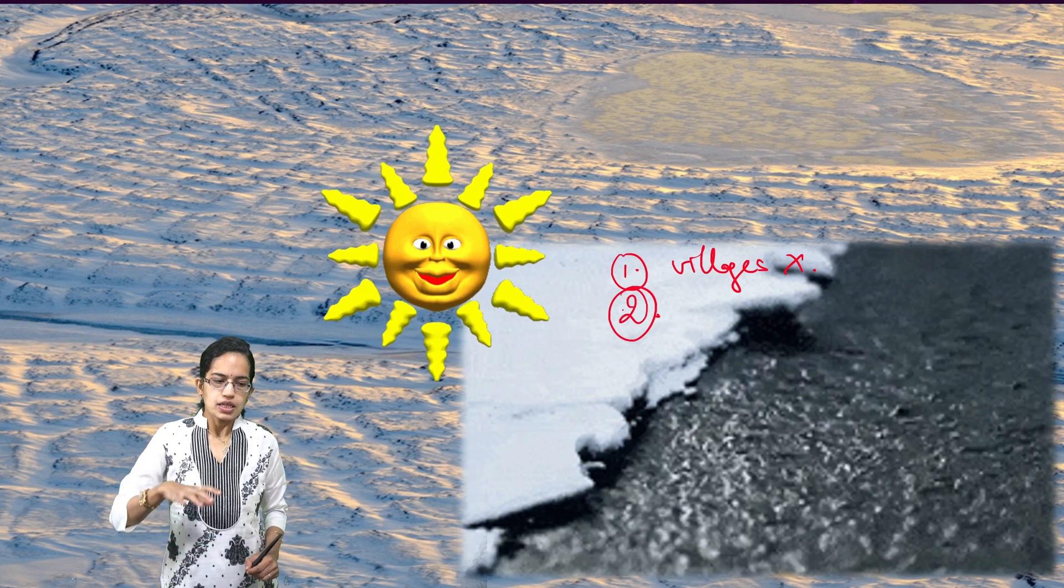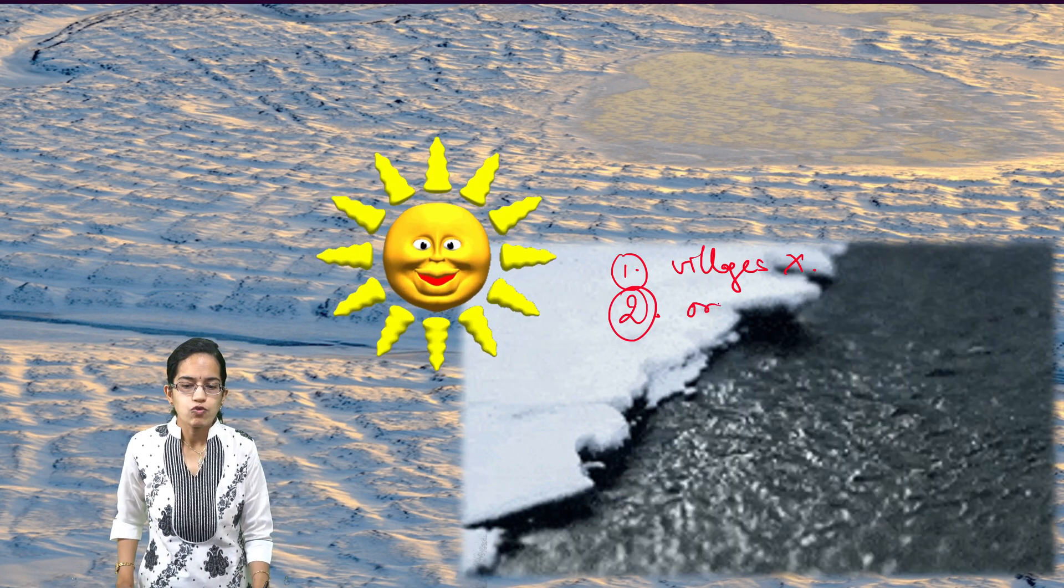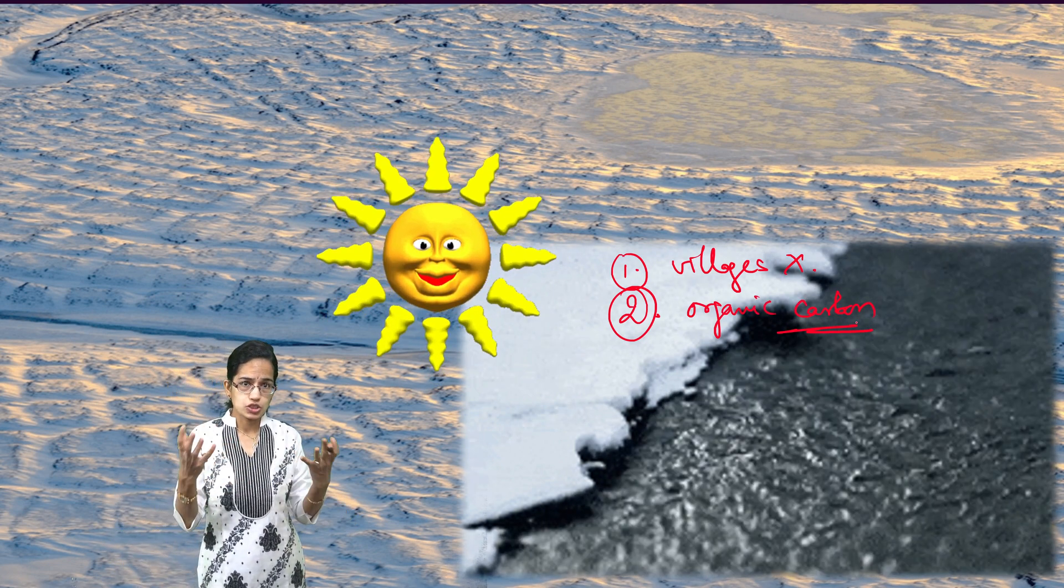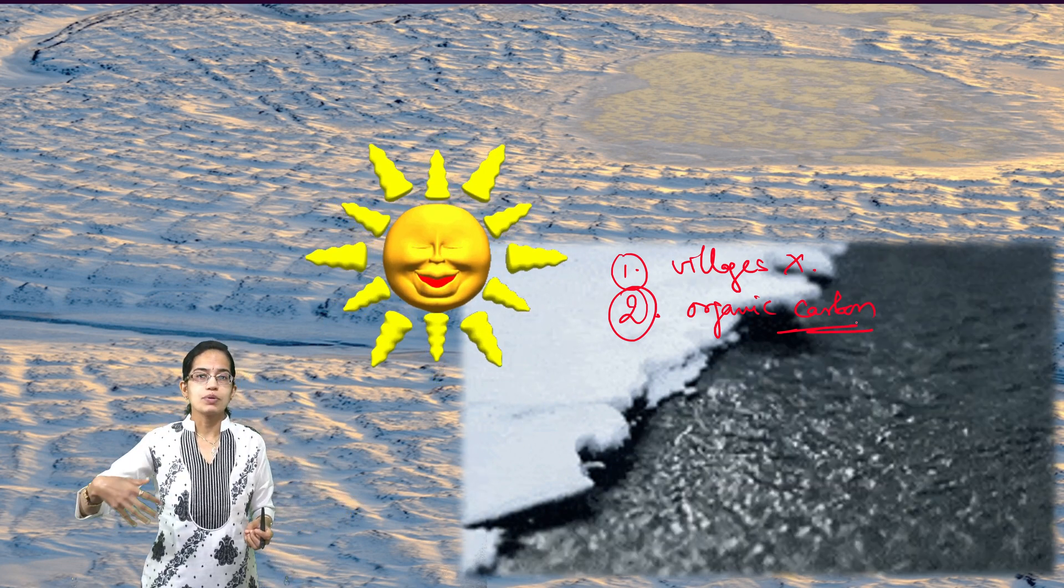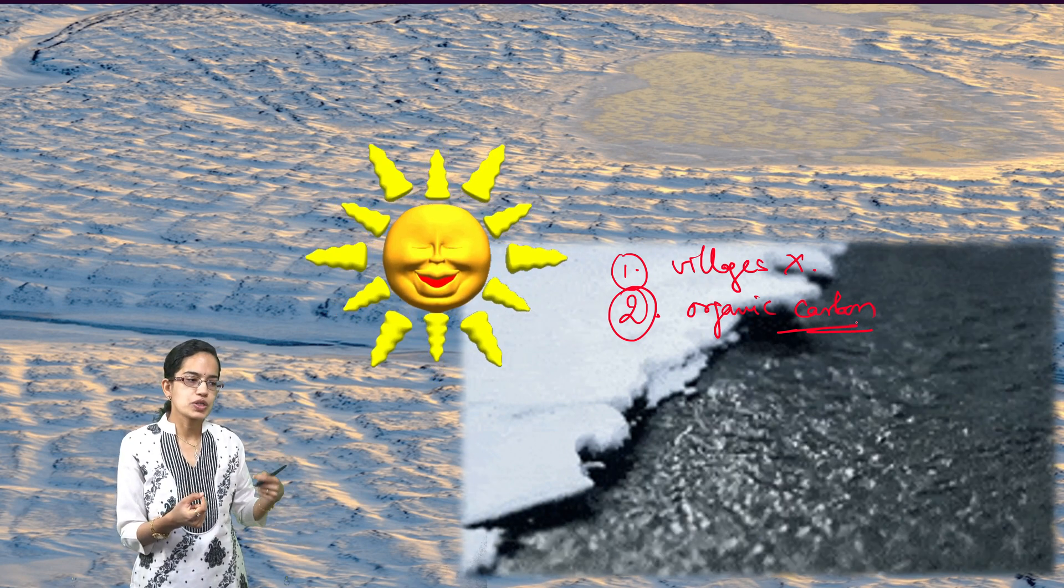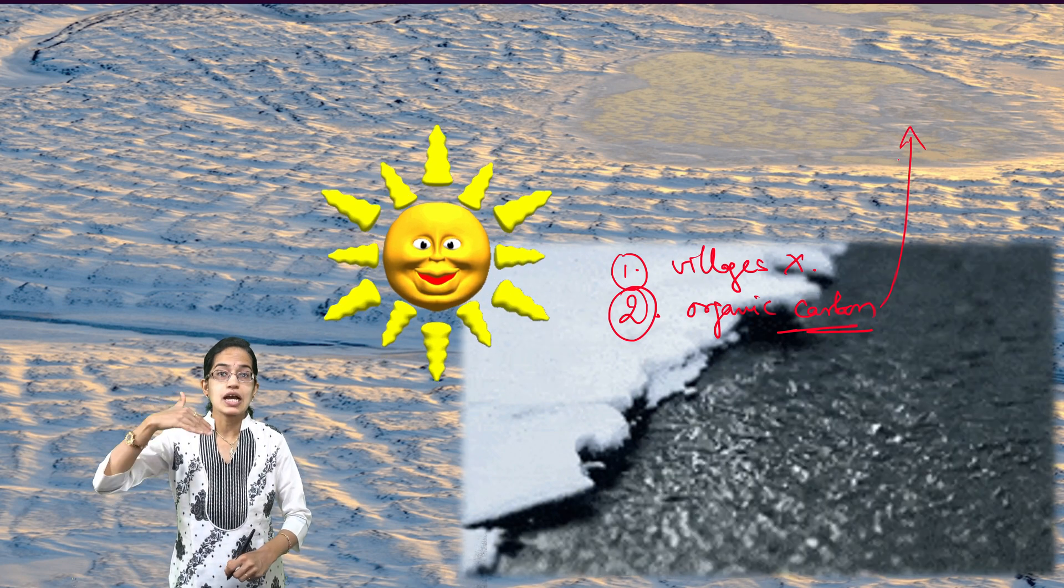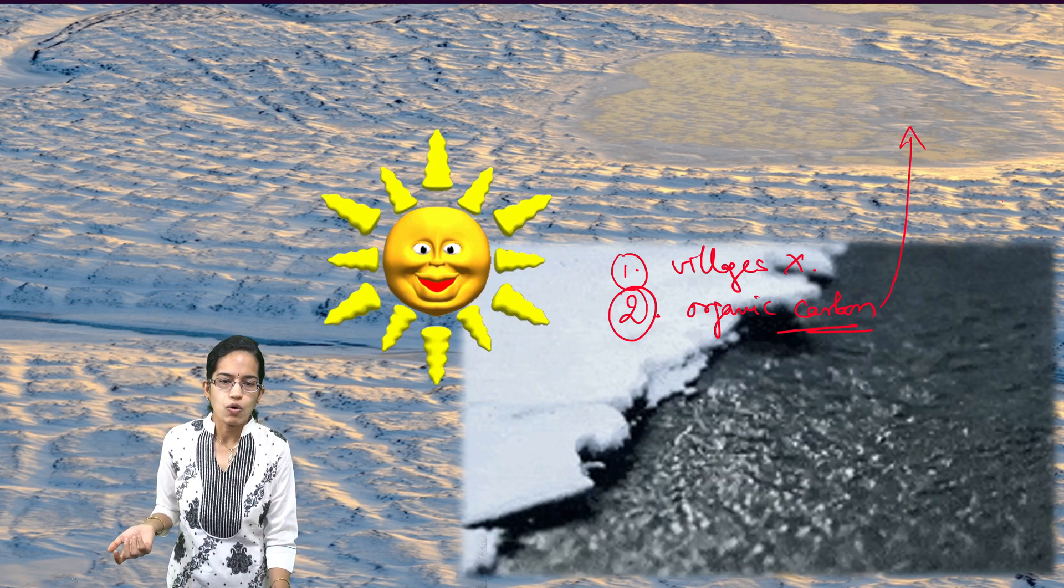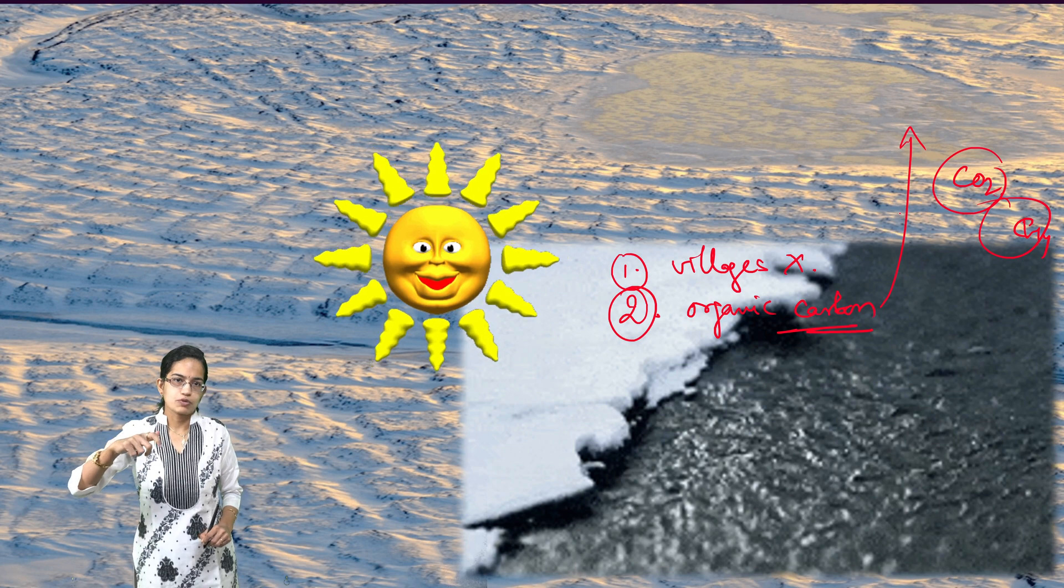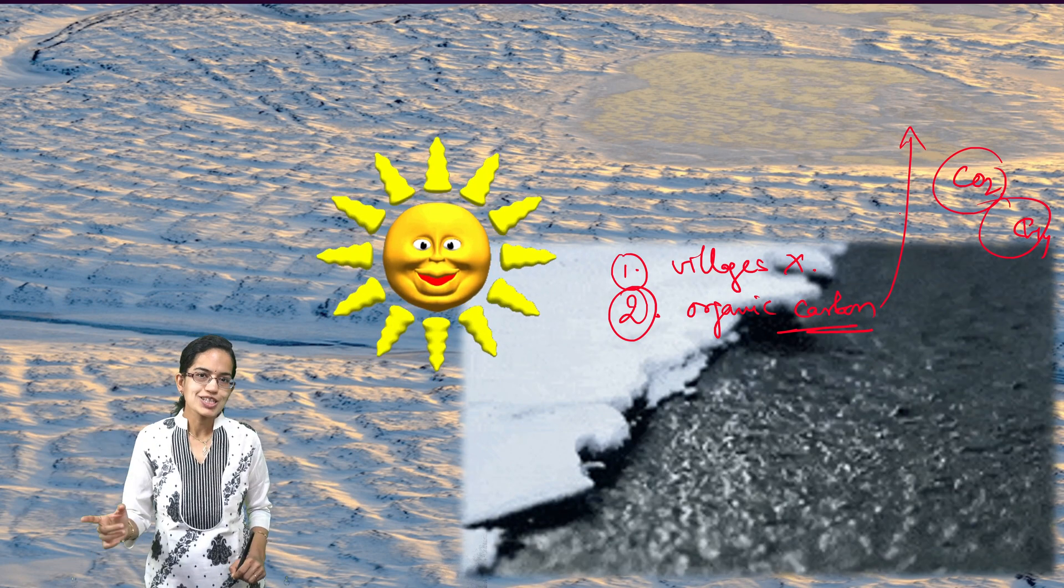The second important concern is when the permafrost is frozen, the plant material is in the soil in the form of organic carbon. It cannot decompose since it's cold and cannot rot away. But as soon as the permafrost begins to thaw, microbes start to act and decompose the material. This would release carbon into the atmosphere in the form of methane and carbon dioxide, greenhouse gases that would be emitted, leading to climate change.